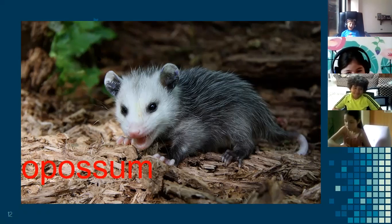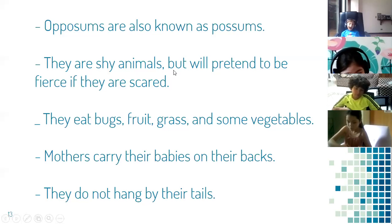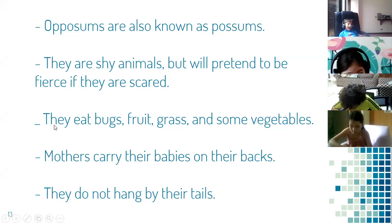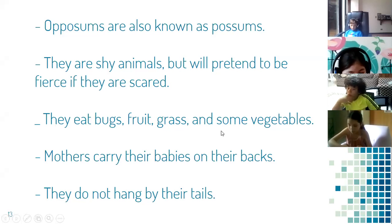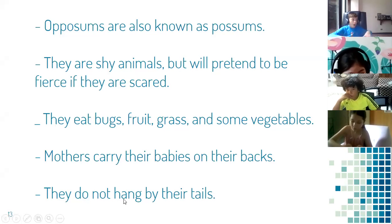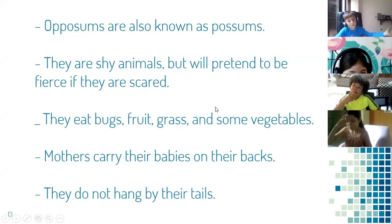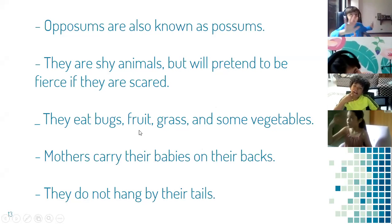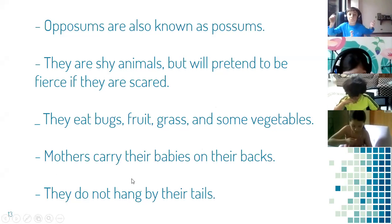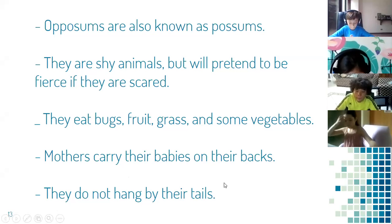Opossums are also known as possums. They are shy animals, but they pretend to be fierce if they are scared. They eat bugs, fruit, grass, and some vegetables. Mothers carry their babies on their backs, and they don't hang by their tails. These are some characteristics and important facts about them.